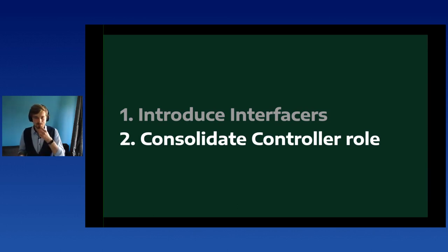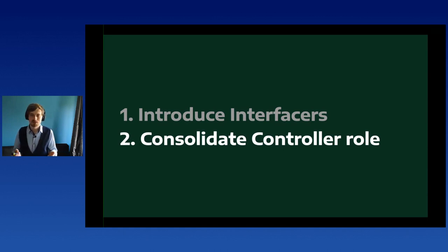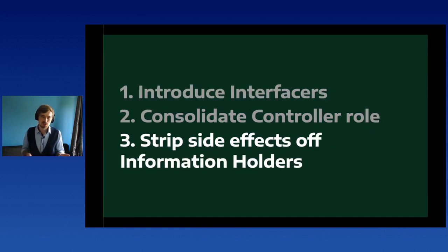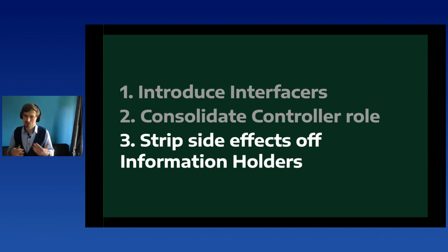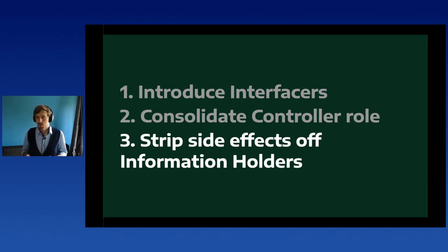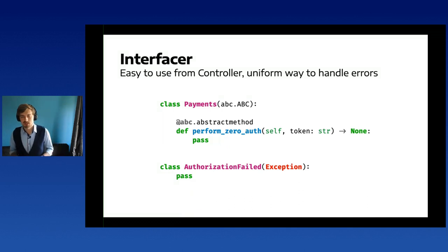Code is ultimately written for other people to read, not just for the computer to execute. The third step is to strip side effects from information holders — objects like Booking should not communicate with external systems internally. That should be offloaded to the controller. The model can remain an information holder that does calculations and checks conditions, but won't communicate with external systems.